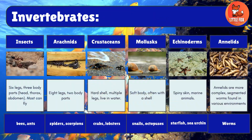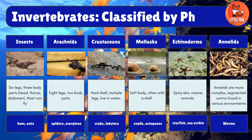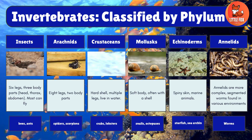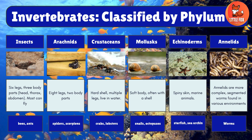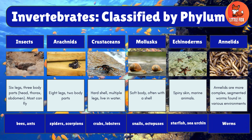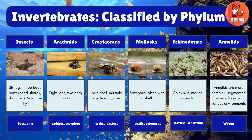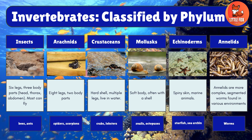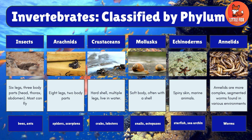Invertebrate animals are further classified into insects, arachnids, crustaceans, mollusks, echinoderms, and annelids.